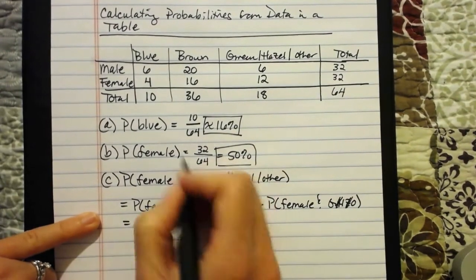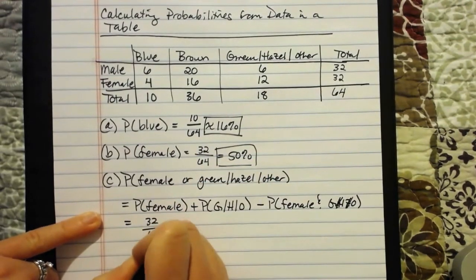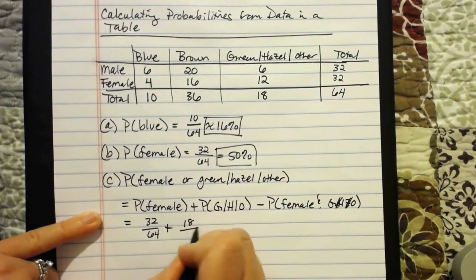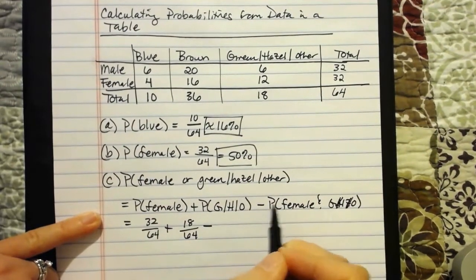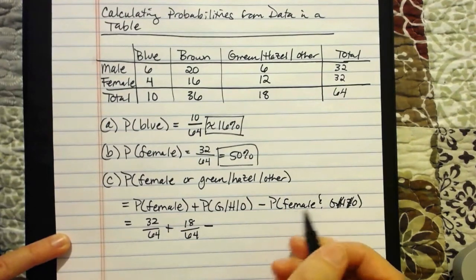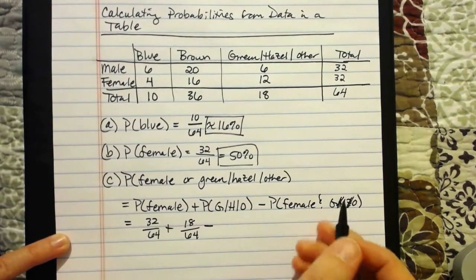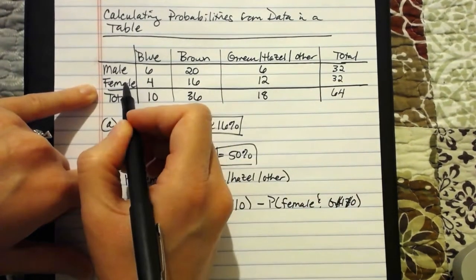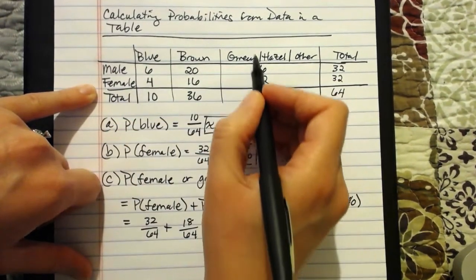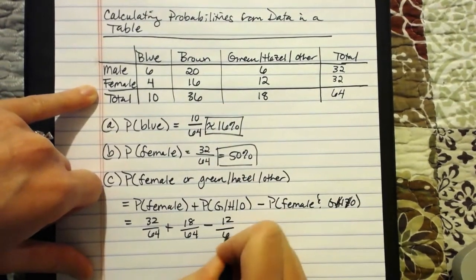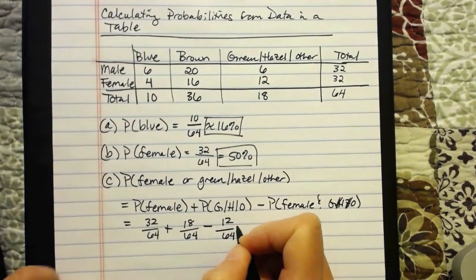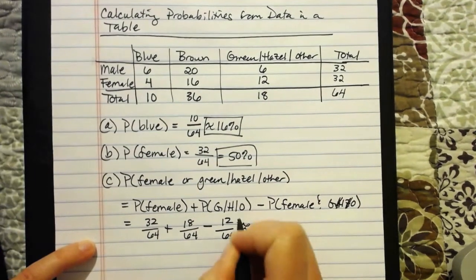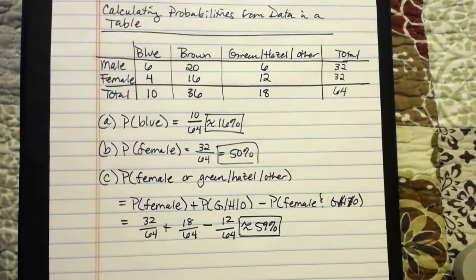Probability of female we already found: 32 out of 64. Probability of green, hazel, and other: 18 out of 64. Now I need to subtract off their overlap. The probability of randomly selecting a female and someone with green, hazel, or other eyes — there are 12 individuals that are simultaneously female and have green, hazel, or other eyes, so 12 out of 64. Crunching that all through, we're looking at about 59%. That's our OR rule.